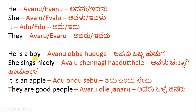He is a boy. In Kannada: Avanu Wabba Huduga. Avanu means 'he', Wabba means 'a' (one, single), and Huduga means 'boy'. There is no suffix for 'is' in Kannada for this sentence.